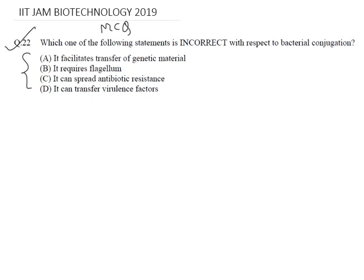Which one of the following statements is incorrect with respect to bacterial conjugation? Whether it is: (A) it facilitates transfer of genetic material, (B) it requires flagellum, (C) it can spread antibiotic resistance, or (D) it can transfer virulence factors.